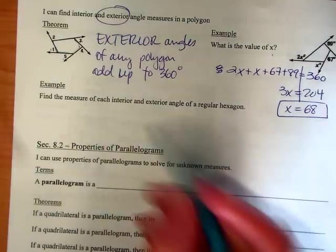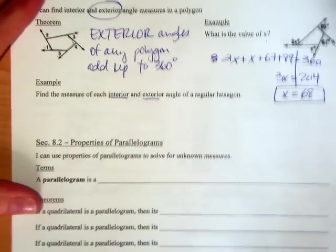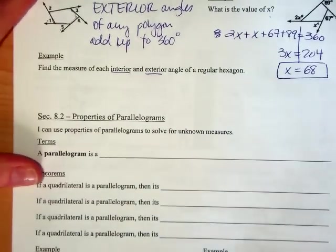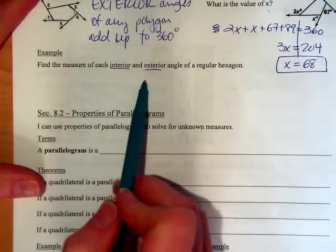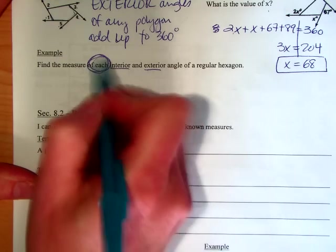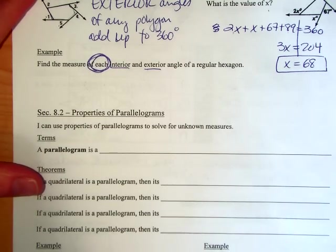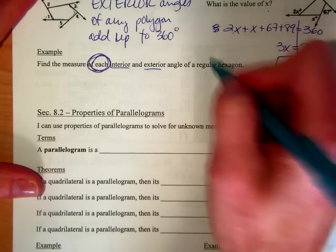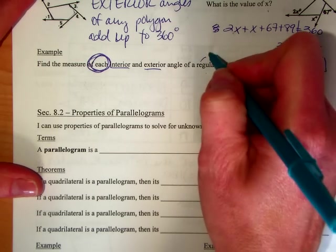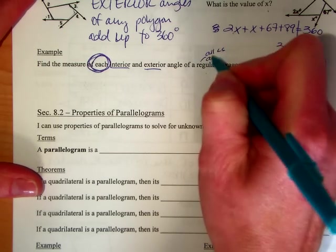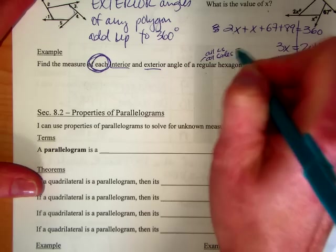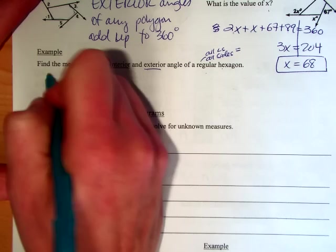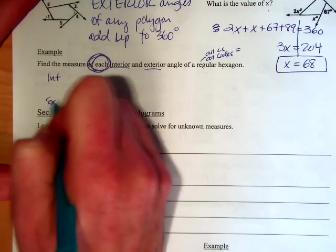One last one, and this is actually going to mix together both interior and exterior. We're going to do one of each. So find the measure of each interior and exterior, and it said each. So each one, I want the measure of one of them. Of a regular, and if you don't remember, regular means that everything's equal. So all angles and all sides are equal.